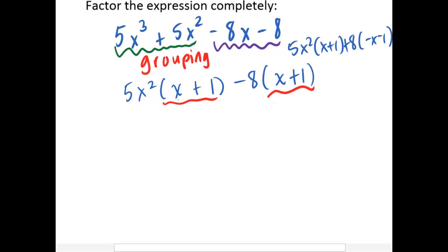So we see that both of them have x plus one in common. So I'm going to write down what they have in common, which is x plus one. And I'm going to read off the rest, five x squared minus eight. So I rewrite what they have in common and then I read off the rest. This is my expression factored completely.